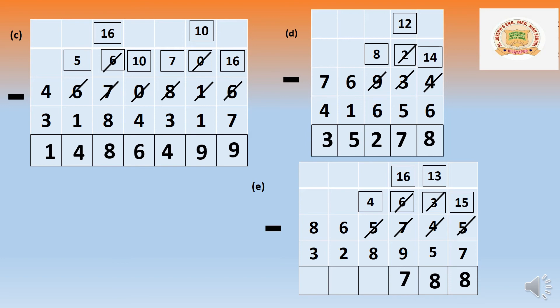In the thousands place: 4 cannot minus 8. Borrow from 6 — 6 becomes 5, and 4 becomes 14. Fourteen minus 8 is 6.